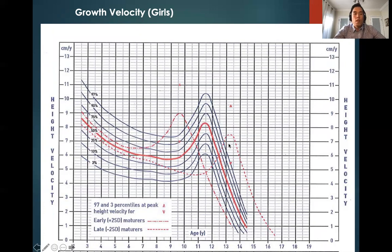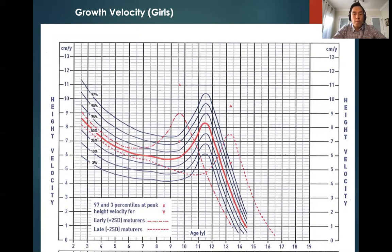This height velocity plotted against age graph already exists in Epic. Many of you who have done endocrine rotation have already seen the graph that can be used to compare growth velocity.